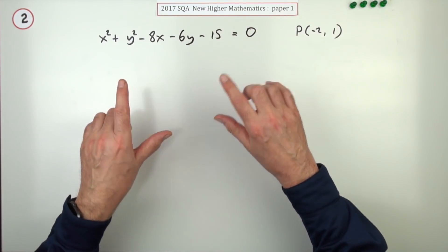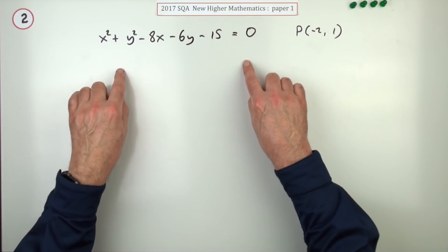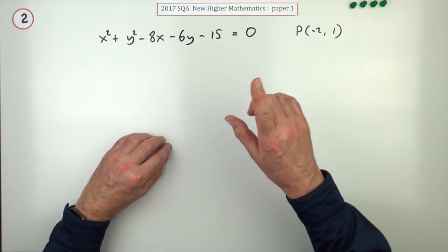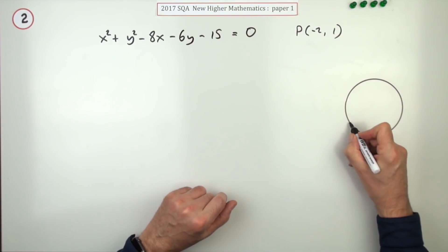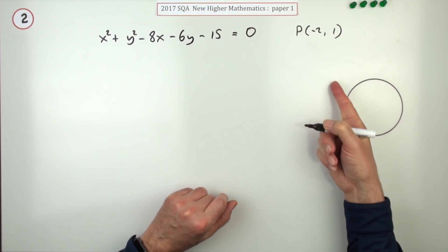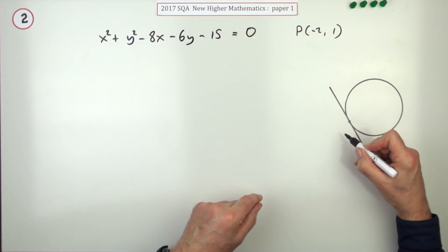Now, you don't do that by differentiation in the higher. You're going to do it purely geometrically by thinking of the circle so that at the point P, its tangent is perpendicular to the radius.